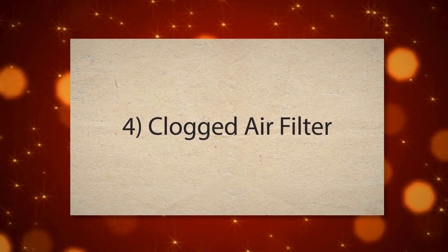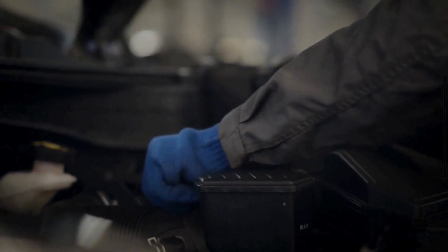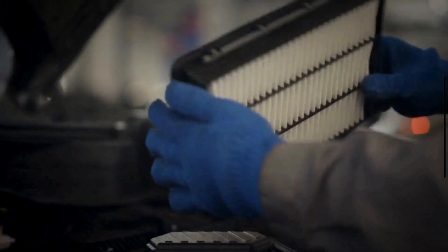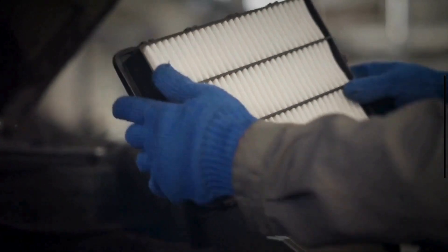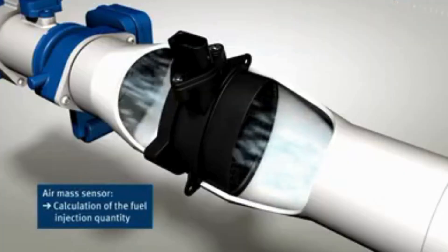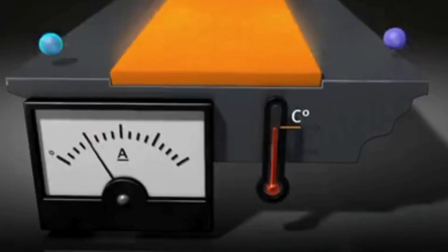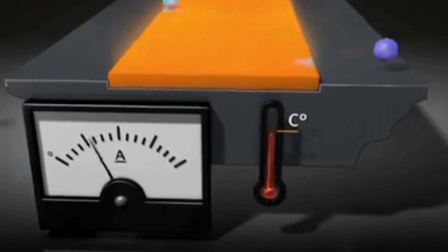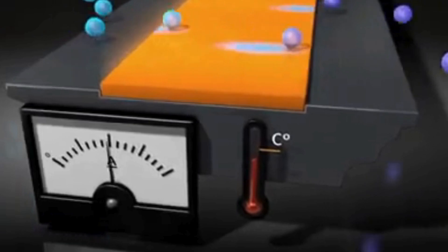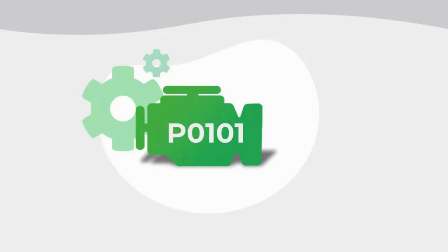A clogged air filter restricts the amount of air entering the engine, while an improperly installed filter can allow unfiltered air to bypass it and reach the MAF sensor. This restricted or unmetered airflow causes the MAF sensor to report incorrect values, triggering the PO101 code.